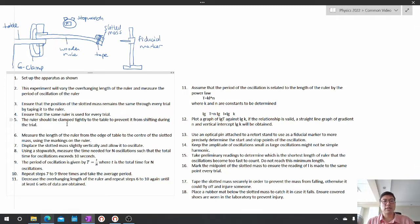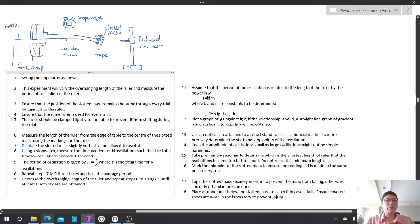Now that we've got our control variables set up, let's talk about how we're going to measure what we need to measure. Measure the length of the ruler from the edge of the table to the center of the slotted mass using the markings on the ruler. Interestingly enough, we can use the ruler to measure itself.